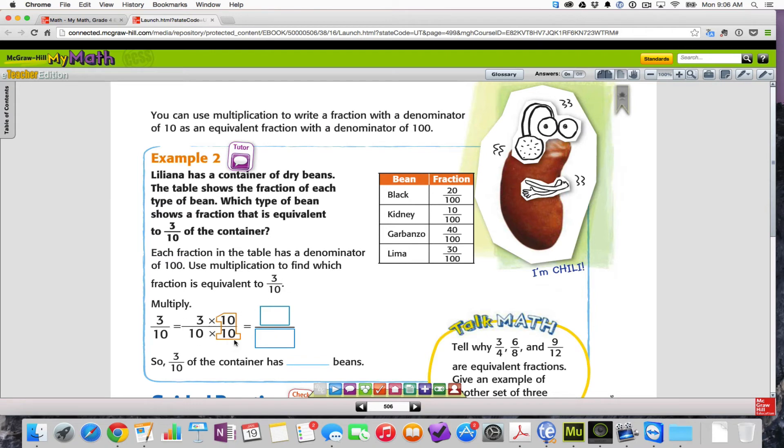So, here they have three-tenths. We, if we times the top by ten over ten, three times ten is thirty. And ten times ten is one-hundred. And if we look up here, the one that has thirty-one-hundredths happens to be the container of lima beans.